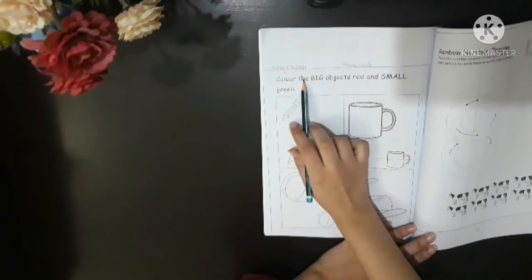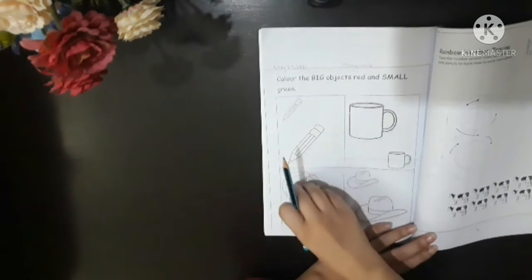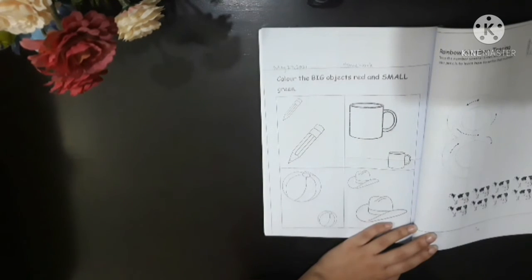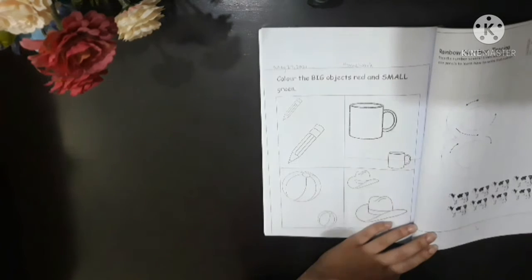The activity says color the big objects red and the small green. Now we've got four groups with two same objects in each group. So what are we going to do? First we will determine which one is big and which one is small.